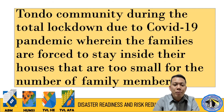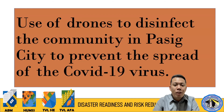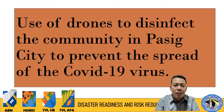The house is too small for the number of family members, so they are too crowded. Since they are crowded, there is a greater chance for the COVID-19 virus to transfer from one person to another. Next situation: use of drones to disinfect the community in Pasig City to prevent the spread of COVID-19. Large drones carrying disinfectant were flown to disinfect the area and buildings. The answer is C — capacity and efficiency to reduce disaster risk.